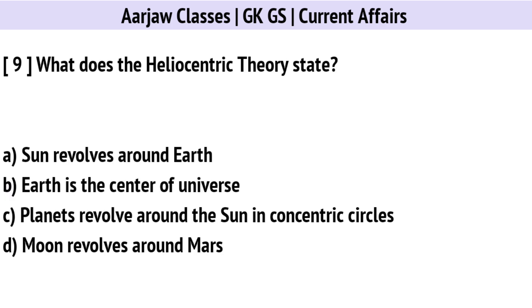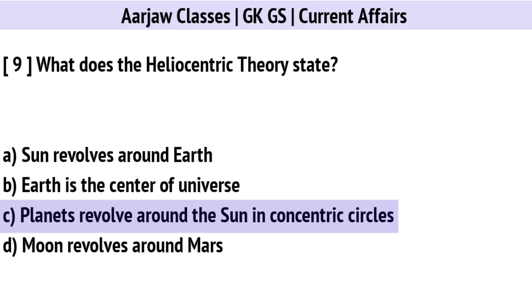What does the Heliocentric Theory state? Correct option is C: Planets revolve around the Sun in concentric circles.